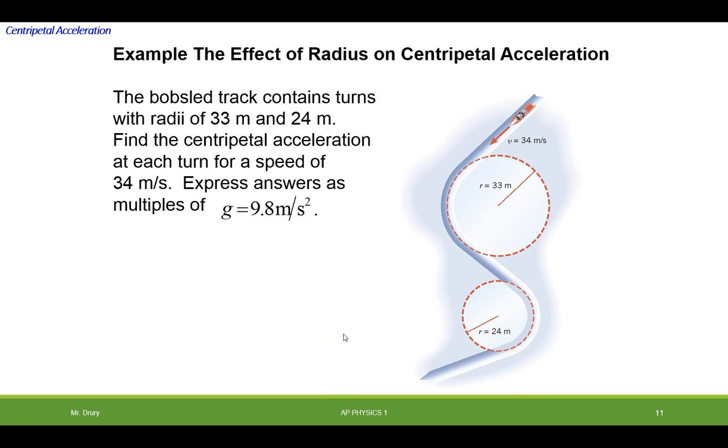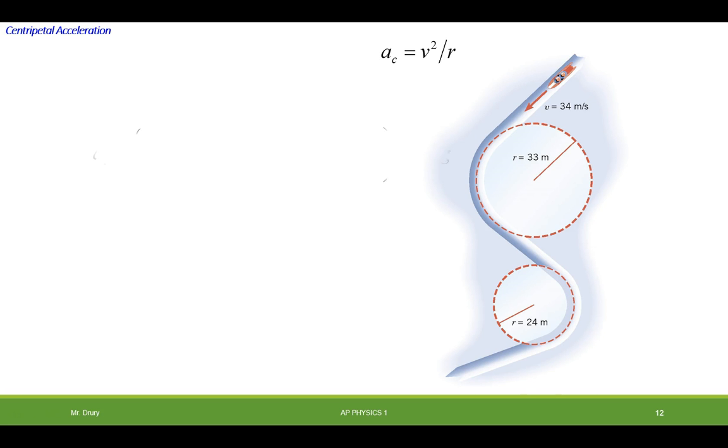Looking at the equation for centripetal acceleration, you should be able to figure that out. We have the equation for centripetal acceleration, v_t squared over r. And we're keeping v the same. So what happens when we make r smaller? a should get larger.